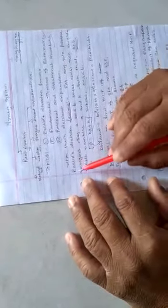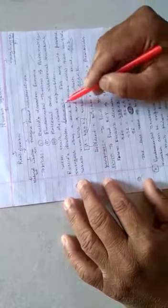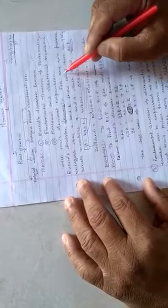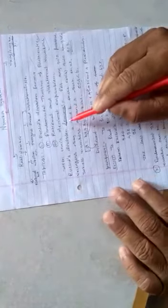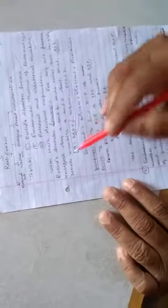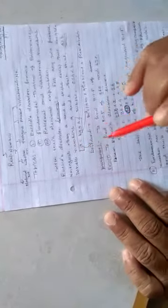Now come to the first topic, Euclid's division lemma. As you know that Euclid was a great mathematician, and there is a new word in it which is lemma. What is lemma? Lemma is a well-proven statement which is needed to prove another statement. And Euclid's division lemma states that